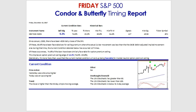When this market condition occurs, three-quarters of the time it turns out to be favorable, as opposed to just two-thirds of the time. Statistically, it's more likely than usual that our current market condition will end up being a favorable one for market-neutral option premium selling, such as through condors and butterflies.